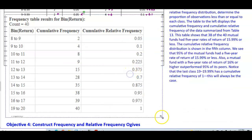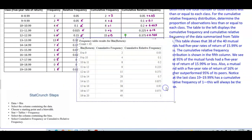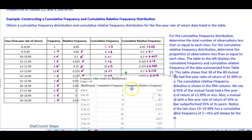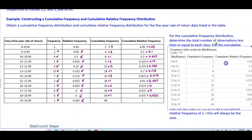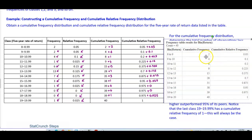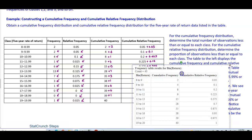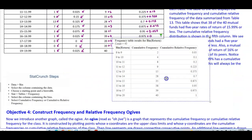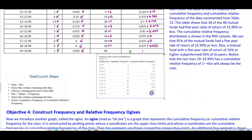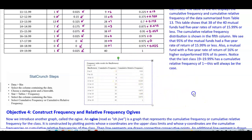Let's match this with what we calculated manually. You can see the numbers match: 2, 4, 8, 9, 15, 28, 35, 38, 39, and 40. We also have our relative frequency values over here. That's how we would do the cumulative frequency and cumulative relative frequency on StatCrunch.